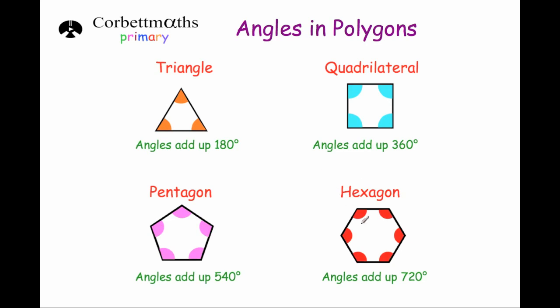And finally, a hexagon. The six angles in a hexagon will always add up to 720 degrees. As you notice, each time we add a side, we add on another 180 degrees.